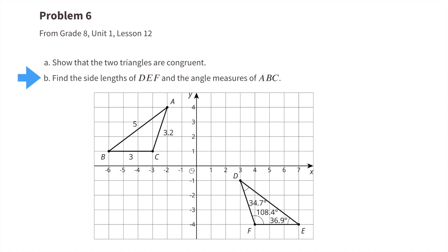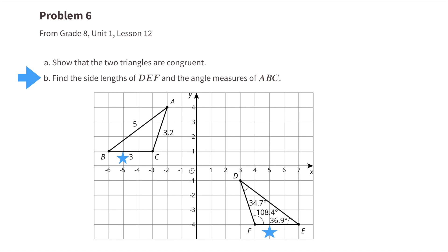Part b: find the side lengths of DEF and the angle measures of ABC. The side lengths of DE are equal to the side lengths of AB, so DE equals 5 units. The side lengths of BC are equivalent to the side lengths of FE, so FE equals 3 units. FD would be equivalent to 3.2 units, since side length FD is equivalent to side length CA.